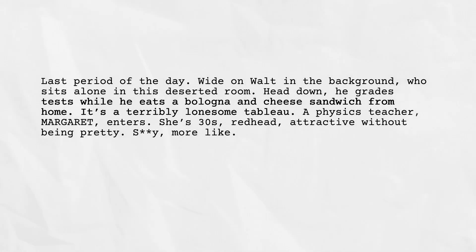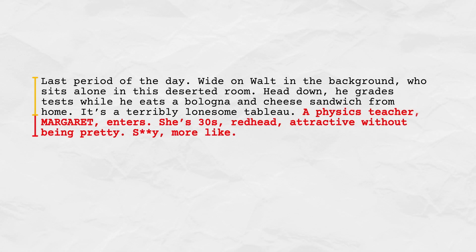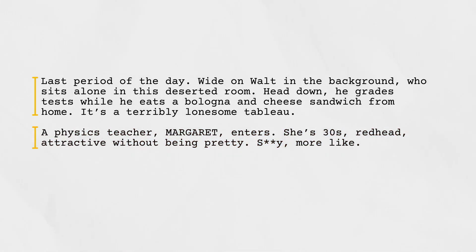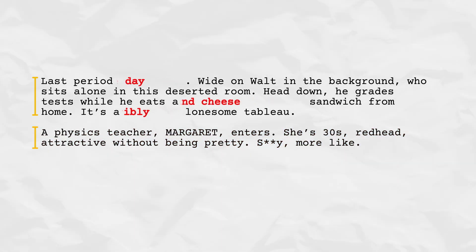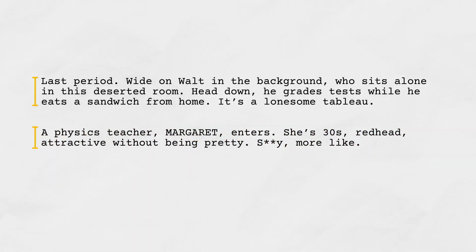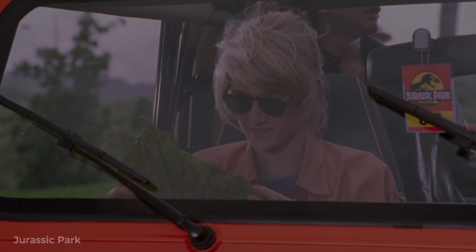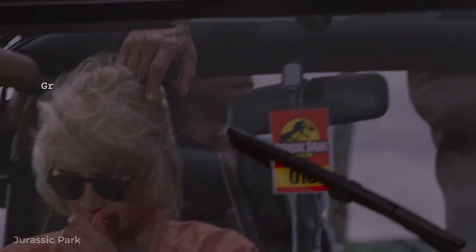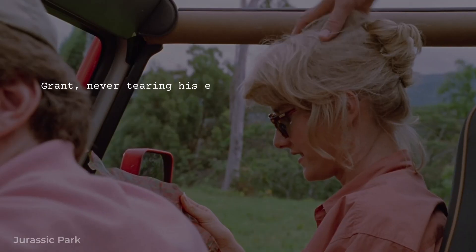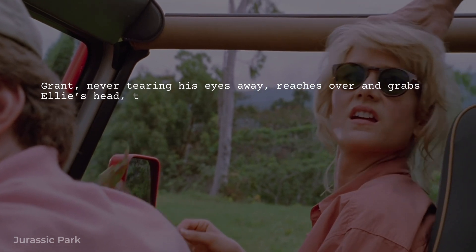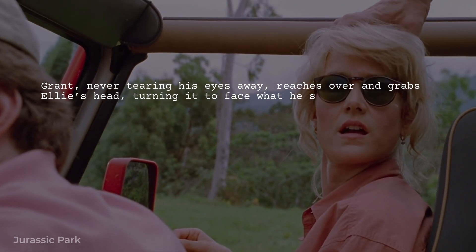Whatever your style ends up being, paragraphs of description should rarely exceed four lines, and it's usually a good idea to strive for as few as possible to make the beat work. As screenwriters, we can only describe what the audience will see on screen — like Grant, never tearing his eyes away, reaching over and grabbing Ellie's head, turning it to face what he sees.